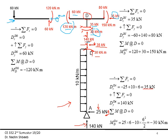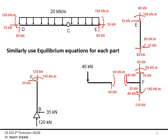Moving to the part with the distributed load, I take 150 kilonewton meter from joint D, along with 35 and 80 kilonewtons, which are equal and opposite. Summation of Fy equal to 0 gives 80 minus 20 times 8, which is 160, so this will be 80. Summation of Fx gives 35. Taking summation of moment about E equal to 0 gives 150 kilonewton meter.